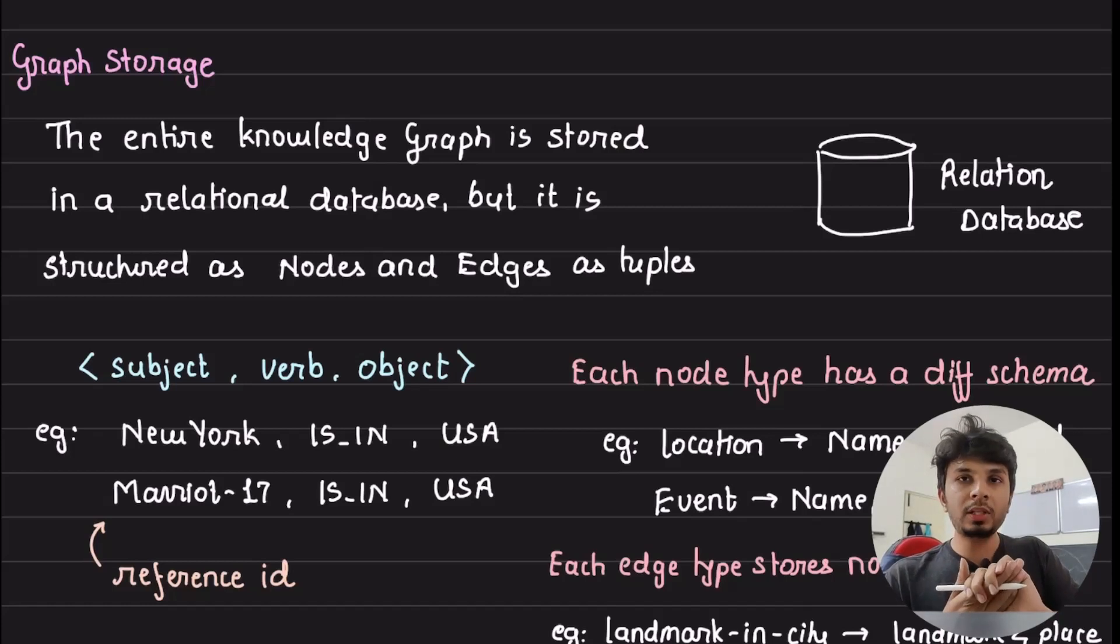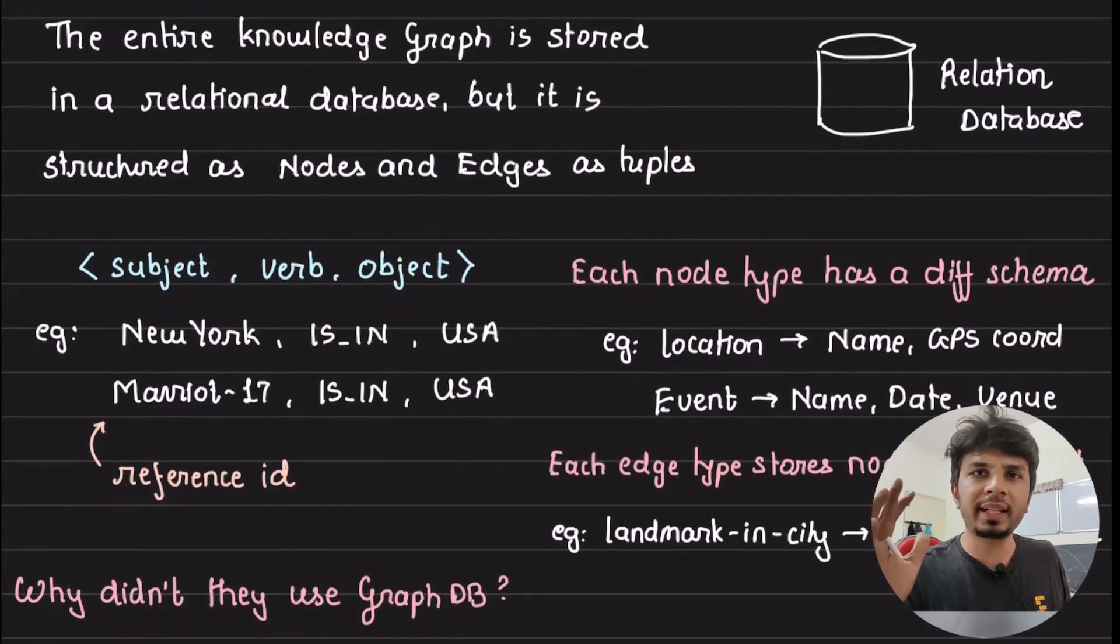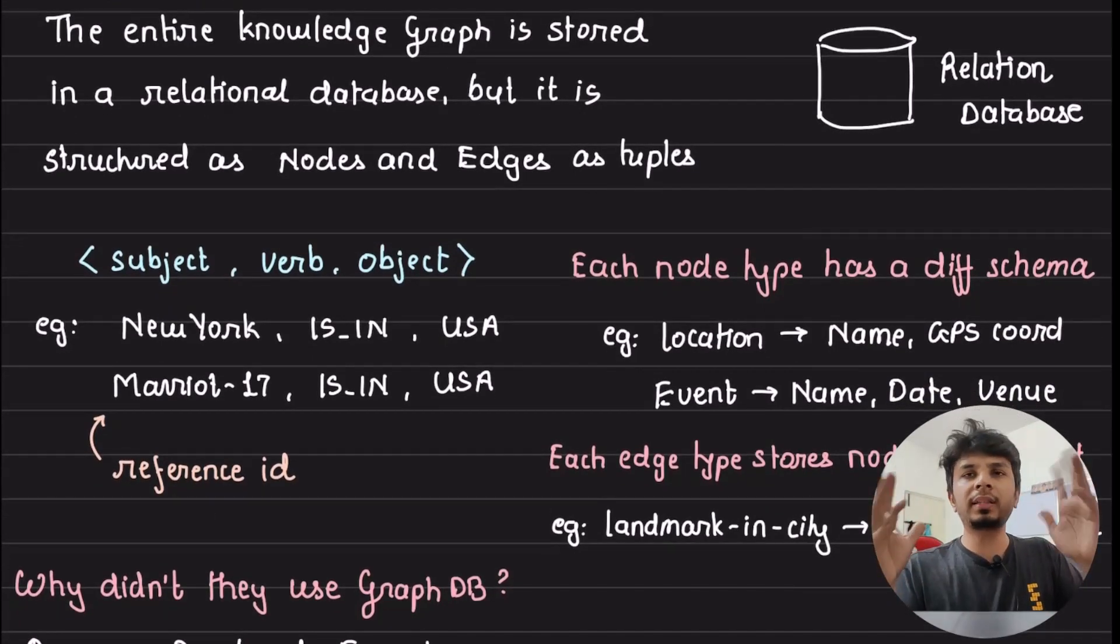So what they do is Airbnb stores their entire knowledge graph in a relational database. The idea is where in a normal graph also you have nodes and edges, in the relational database also, split across multiple tables, they store this very information: nodes and edges. But the way any graph, if you are designing anything related to graph, typical three things that you might have to think of: it's subject, verb, and object.